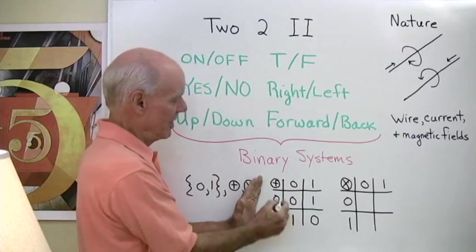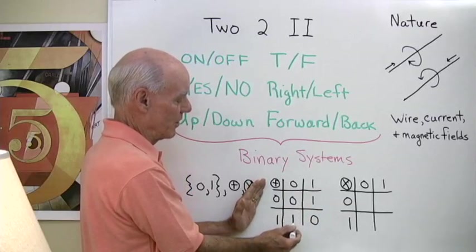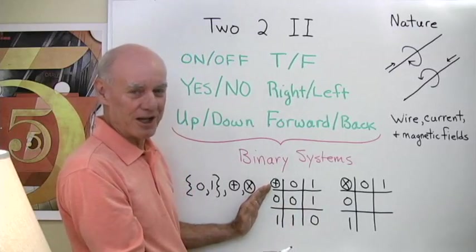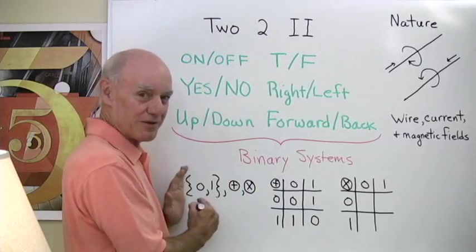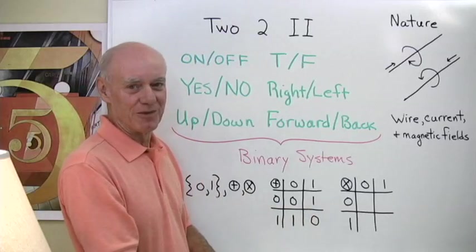Here's our addition table. Zero plus zero is zero, zero plus one is one, one plus zero is one, and one plus one is zero. A little different than we might expect but we have to put this zero right here so that we stay in this set and we have certain properties that we follow and the only choice really for that number is zero.